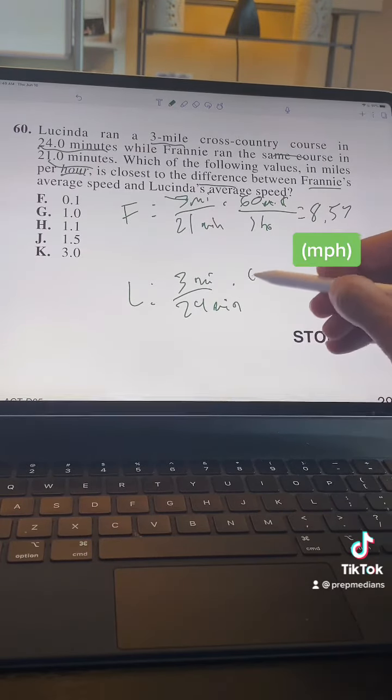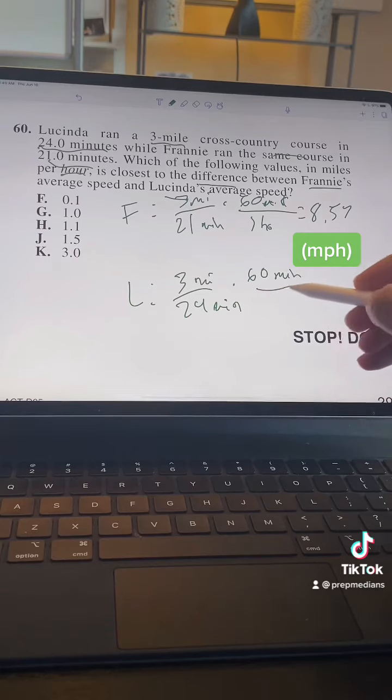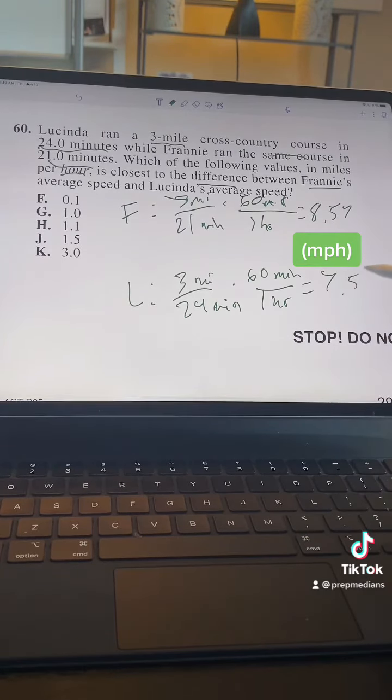Then we do the same thing down here, multiply by the 60 minutes on top and the one hour on the bottom, and that is going to give us a flat 7.5.